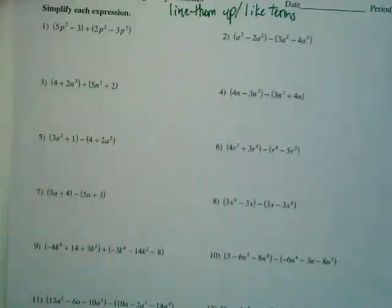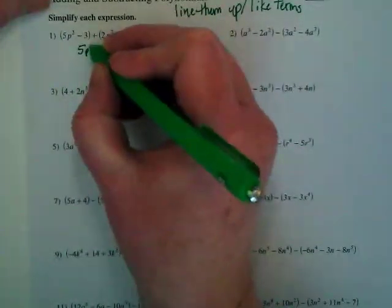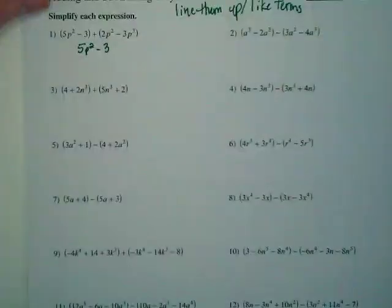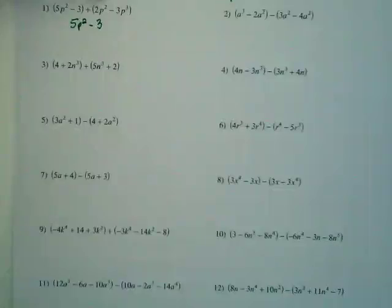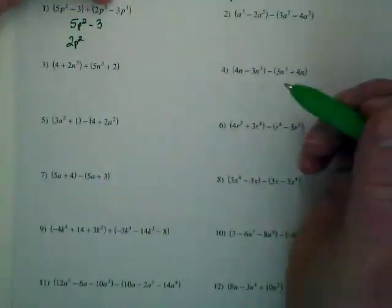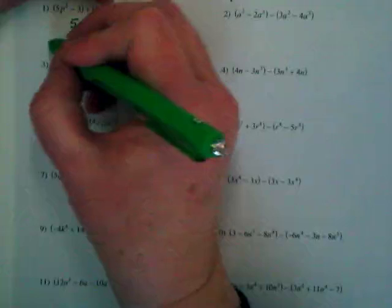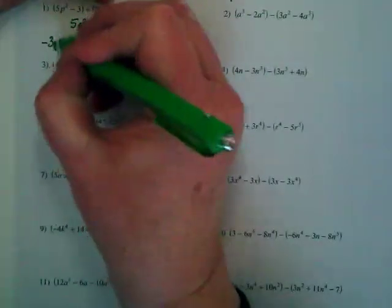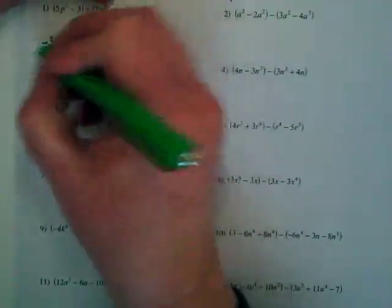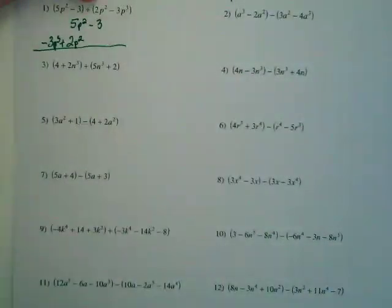Let's rewrite this as 5p minus 3. And then what do I have in my second polynomial? 2p squared. That goes with the 5p. And a negative 3p to the third power. I'm going to put that over here and show a plus sign in between them. I'm just rewriting this in the order that gets them into standard form.